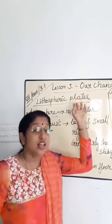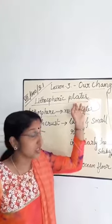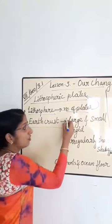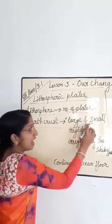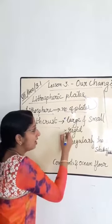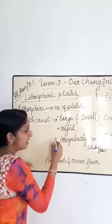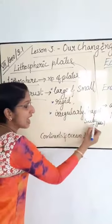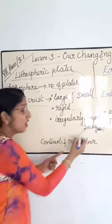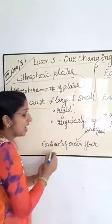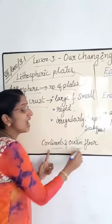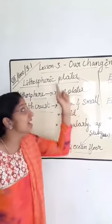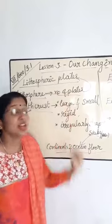Earth's crust consists of large and small, rigid, irregularly shaped slabs or plates, which carry continents and ocean floor. These are defined as lithospheric plates.